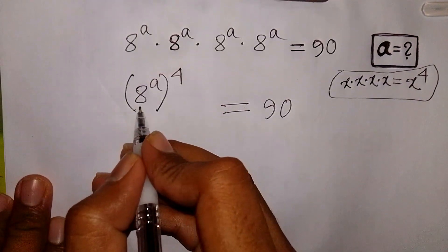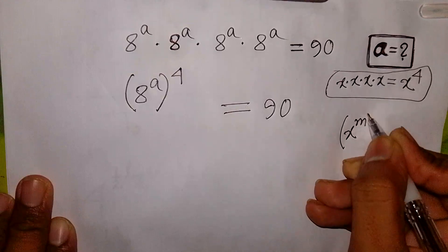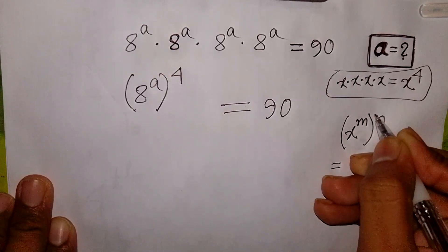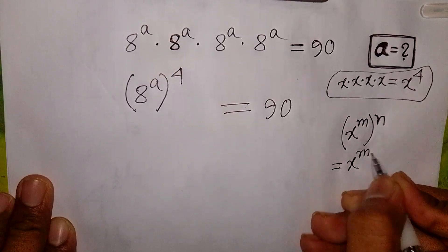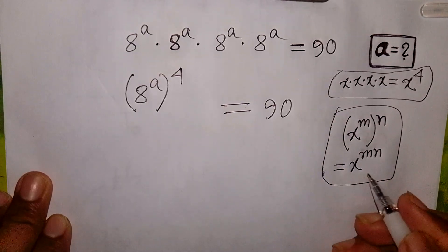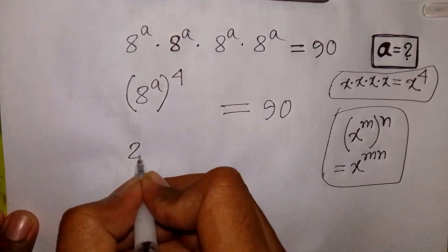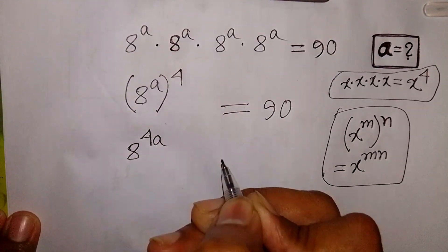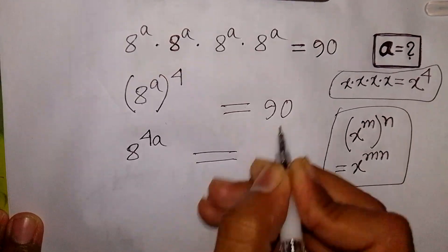We apply the exponential rule that x power m, bracket power n, is equal to x power m times n, that means MN. According to this exponential rule, it will be 8 power A times 4, that means 8 power 4A is equal to 90.